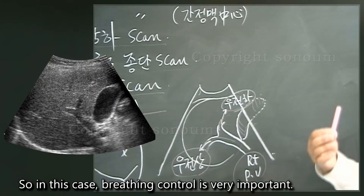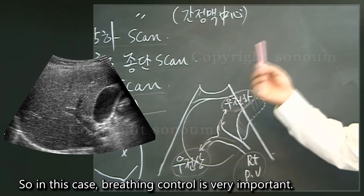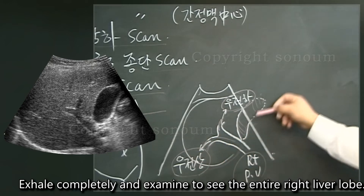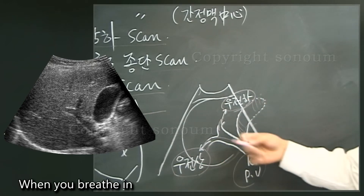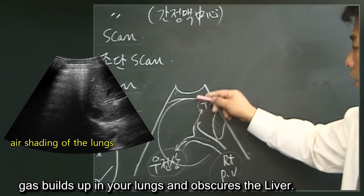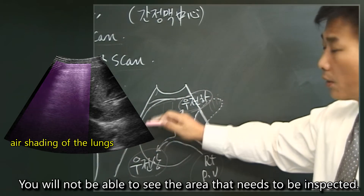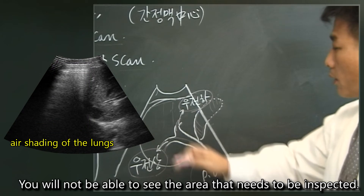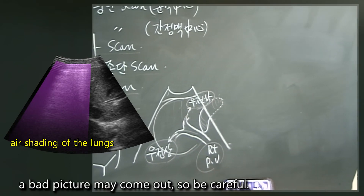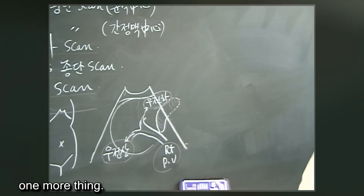In this case, breathing control is very important. Exhale completely and examine to see the entire right liver lobe. When you breathe in, gas builds up in your lungs and obscures the liver, so you will not be able to see the area that needs to be inspected. If you do not control your breathing, a bad image may result — so be careful.